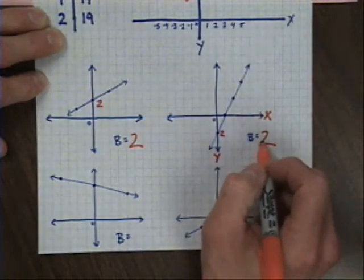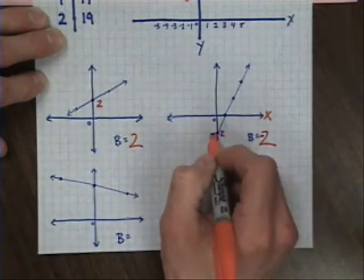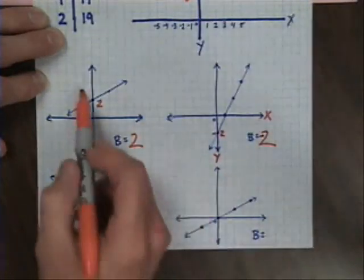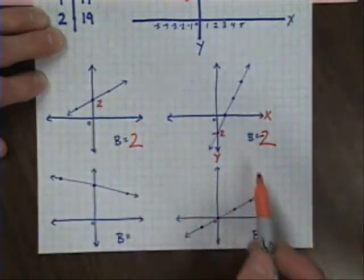You'll notice that, oh, I made a mistake, this one's negative 2 because it's below the origin. So it is important to notice whether it's above or below, like in this case.